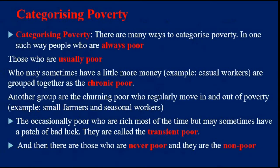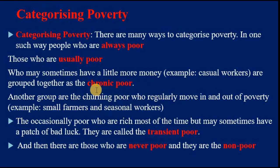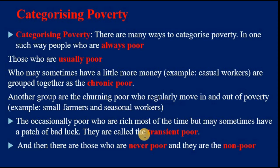Now we will see the categorization of poverty. There are many ways to categorize poverty: some people are always poor, some are usually poor, and some who sometimes have a little money are grouped as the chronic poor or casual poor. Another group regularly moves in and out of poverty and is considered occasionally poor or transient poor.